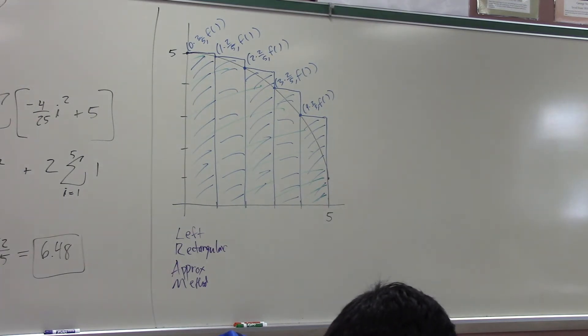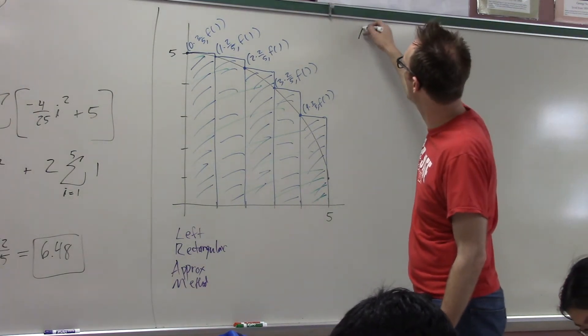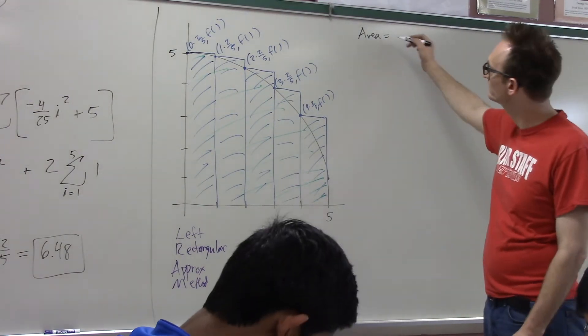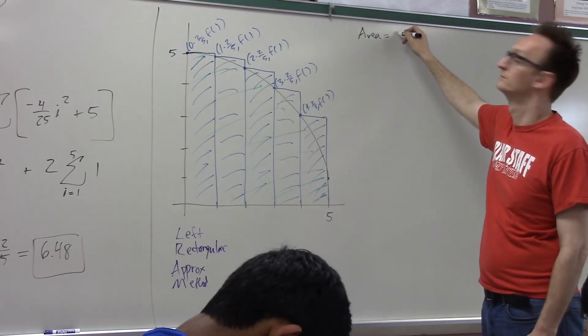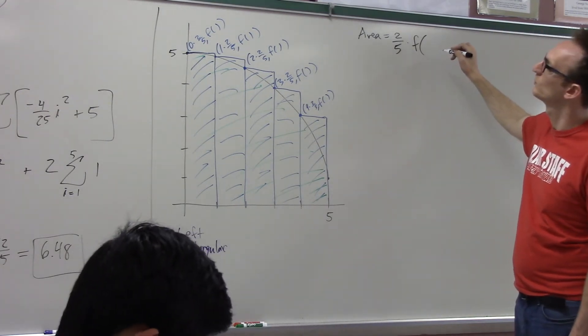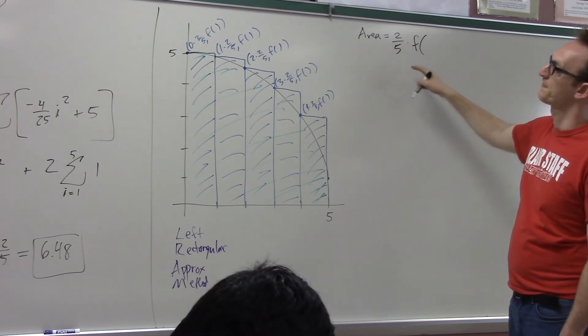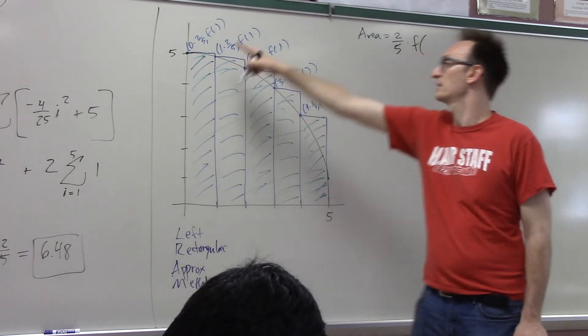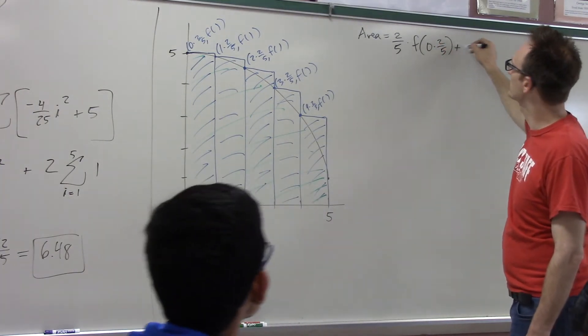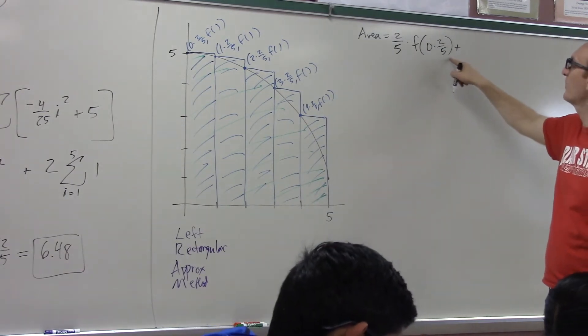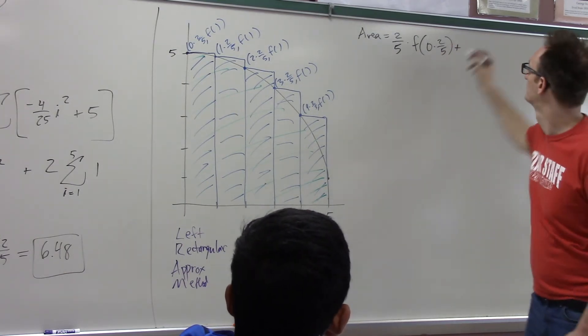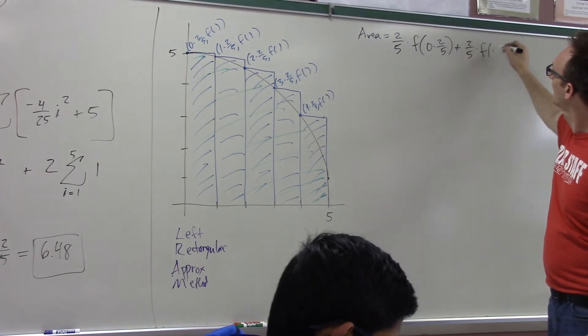Can we start to write out what is the area then? What's the area of the first rectangle? The area of the first rectangle is two-fifths times f of two-fifths. Careful. Oh, f of zero, my bad. Yeah, f of zero times two-fifths. And now what's the area of the second rectangle? Two-fifths times f of one.